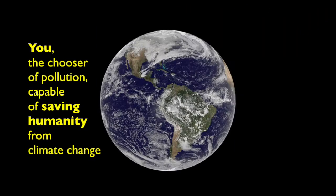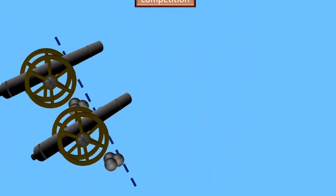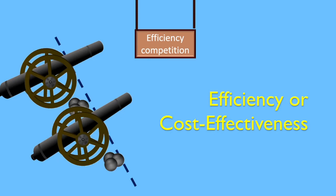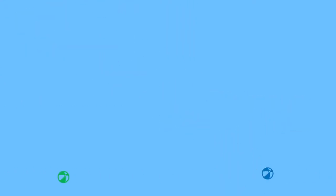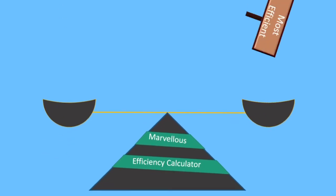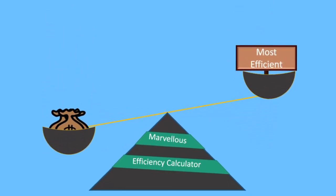Now imagine that you, the chooser of pollution, capable of saving humanity from climate change, must consider what is the most efficient way to reduce pollution. Here, efficiency or cost effectiveness means getting the most bang for your buck. How can we get the most output for a limited input? We need to balance the cost and effectiveness of each measure. This is the speciality of economics.